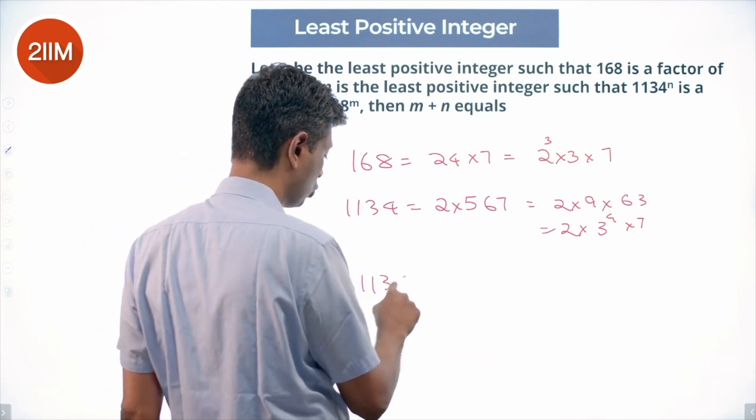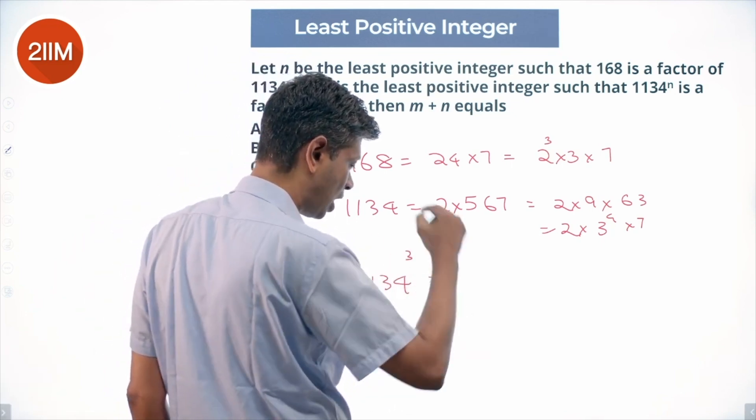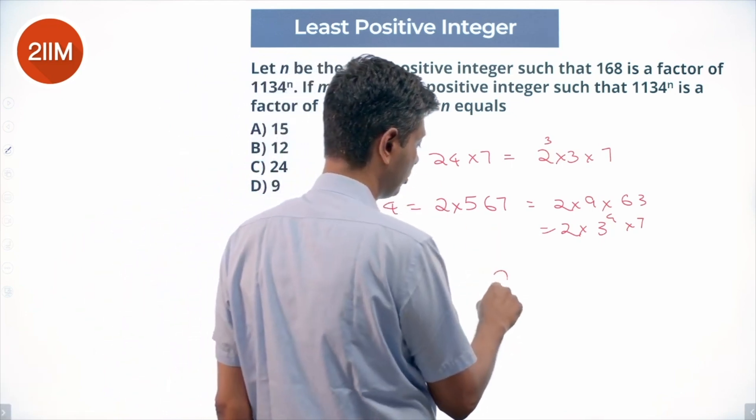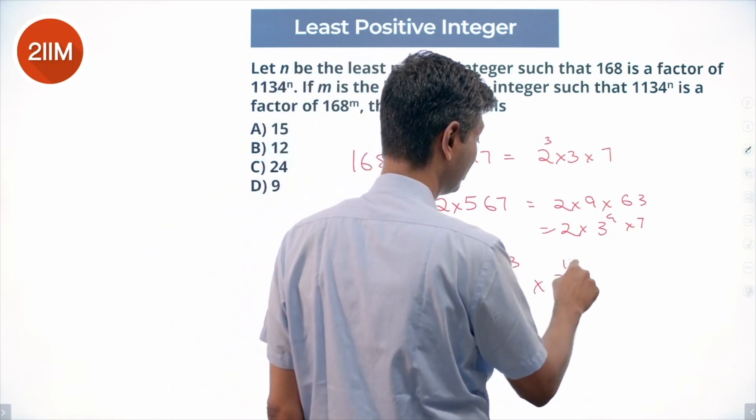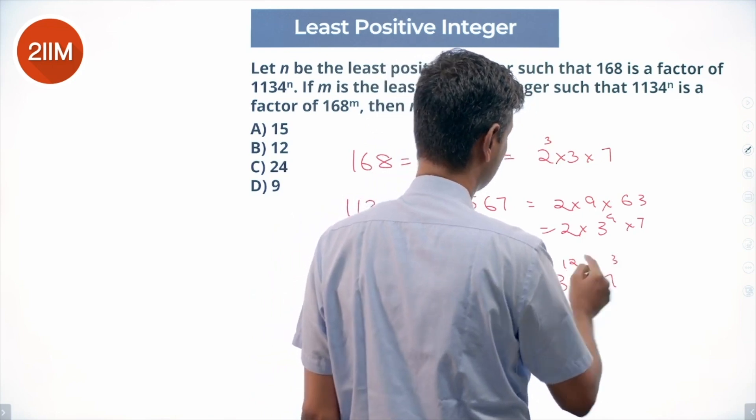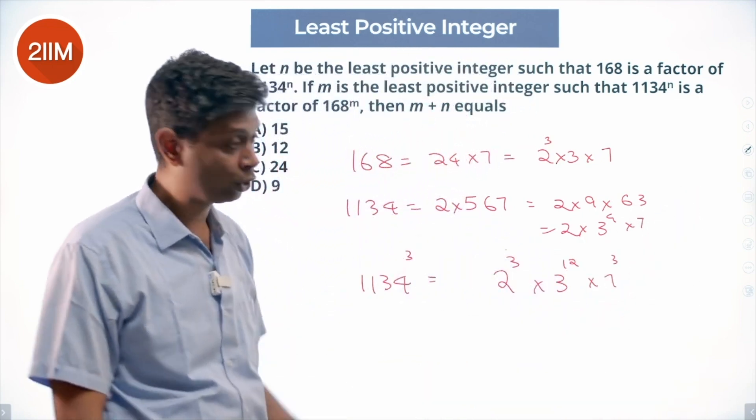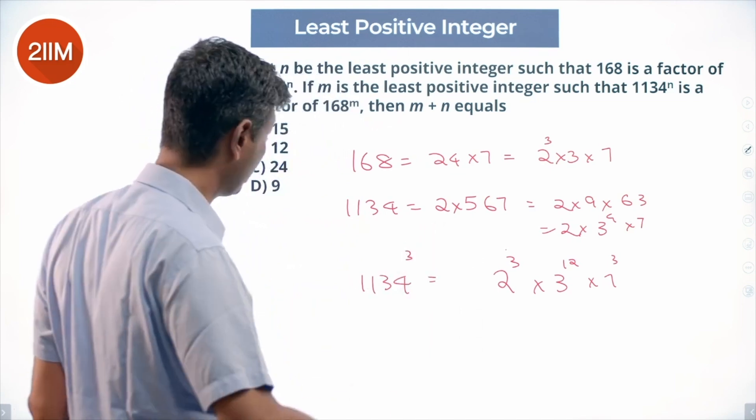So 1134 cubed is absolutely necessary. Only then will we be able to get 2^3, which is important. We will have lots of 3s, lots of 7s. This many 3s and 7s are not required, but we need 2^3, so n equals 3.